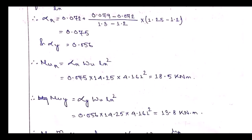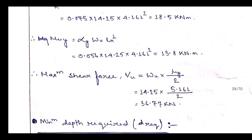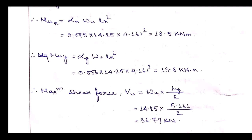Moment in shorter direction: Mx = αx · w · Lx² = 0.075 × 14.25 × 4.161² = 18.5 kN·m. Maximum shear force: Vu = wu × Ly/2 = 14.25 × 5.161/2 = 36.77 kN.